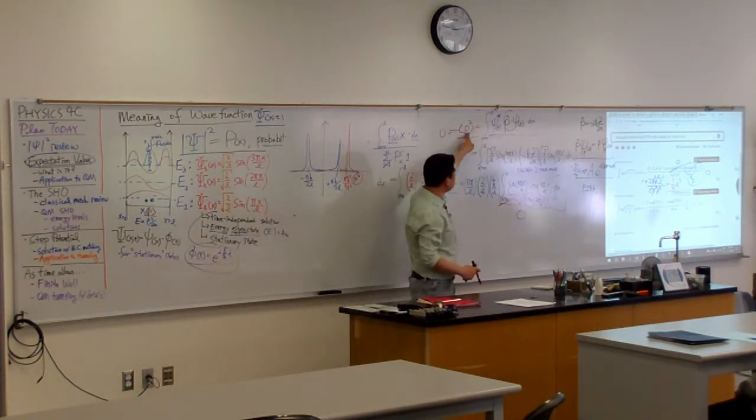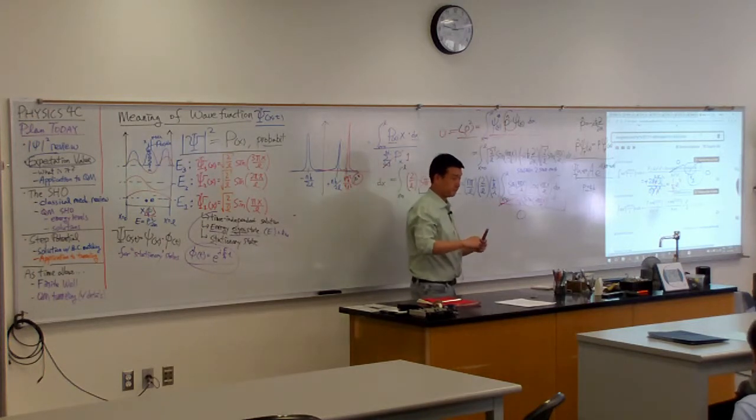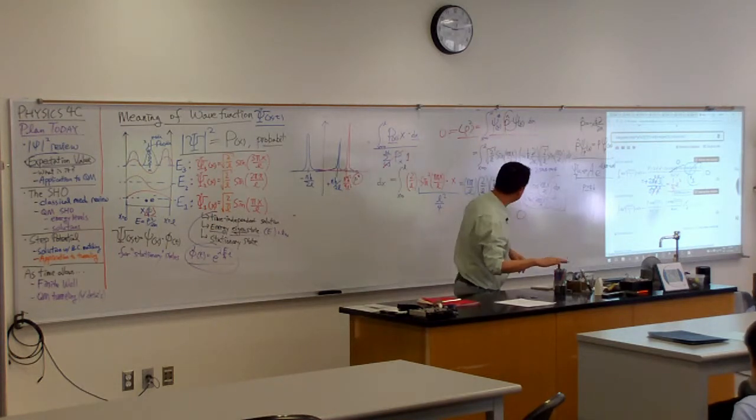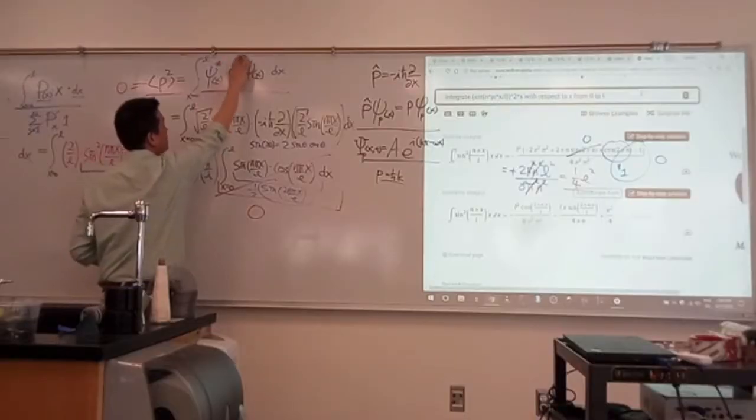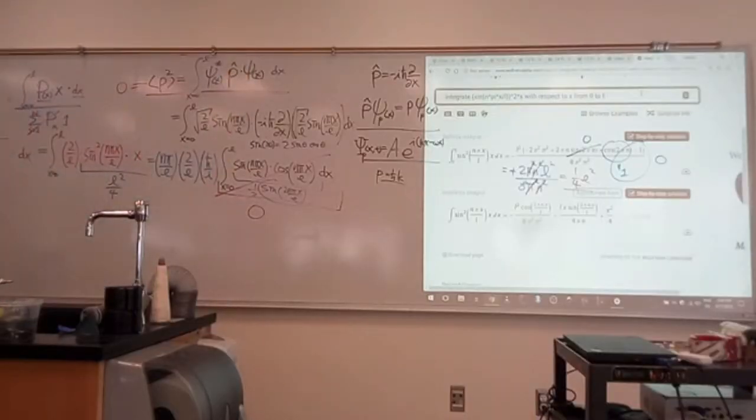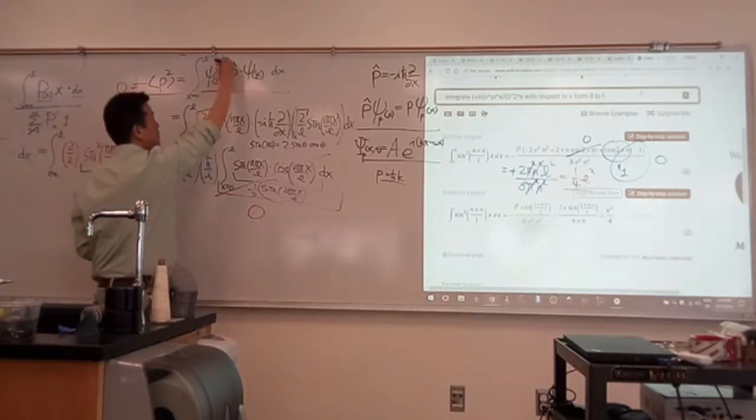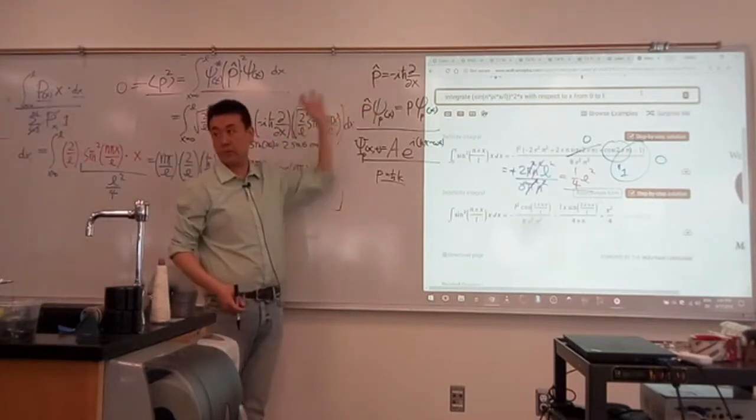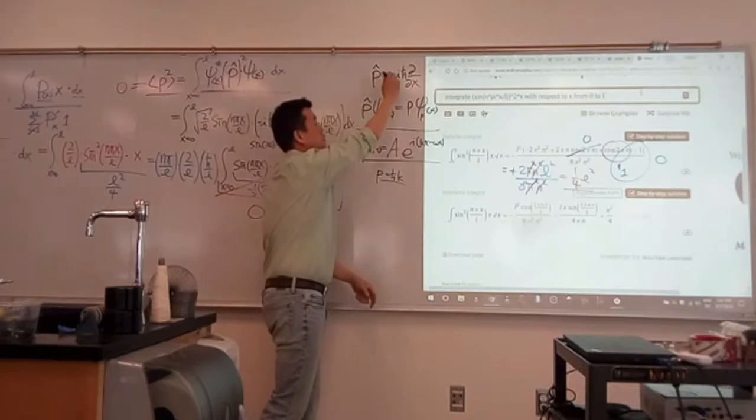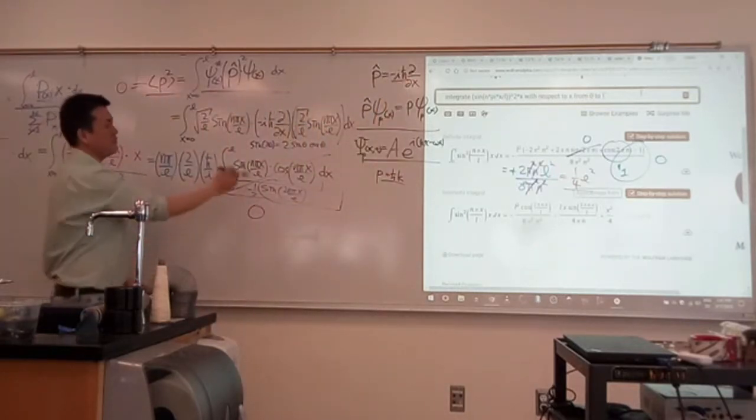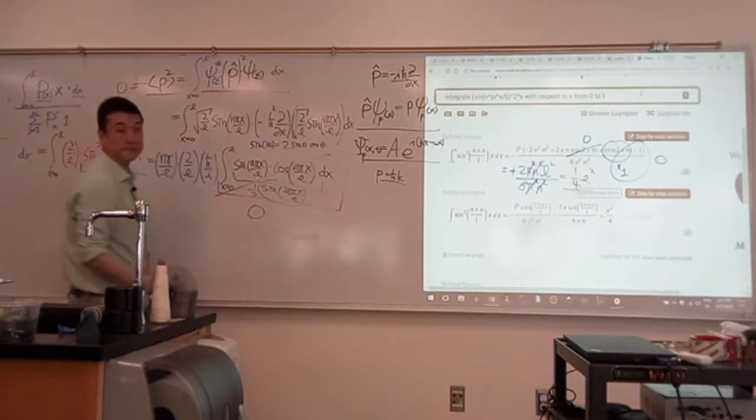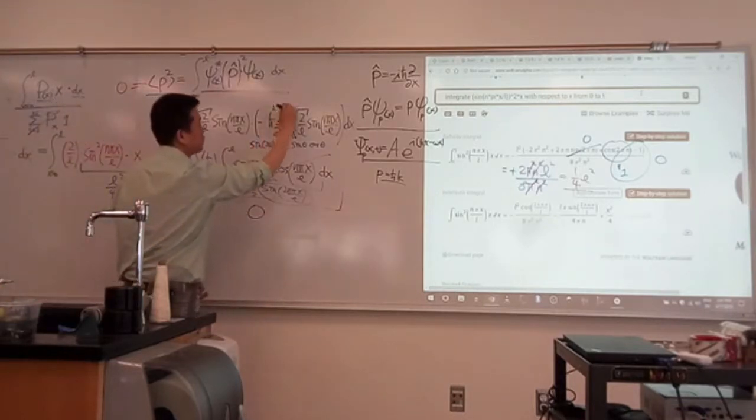We're going to do the expectation value of momentum squared. So when you do that, let me make the changes as I go. Before I was measuring momentum, just one factor. If I'm measuring two factors of momentum, I apply this operator twice. For this coefficient, they multiply together. Minus i squared is minus 1, and I have ℏ². Now I have the second position derivative.